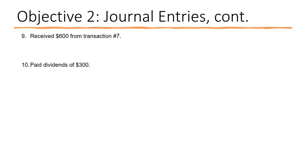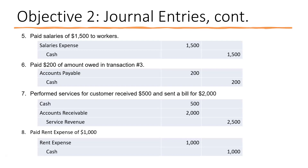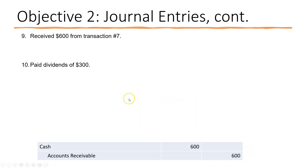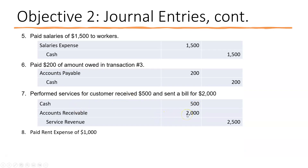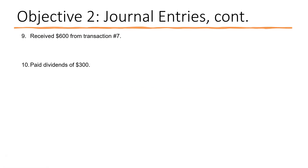Transaction nine: received $600 from transaction seven. Transaction seven was where we performed services, received $500 cash, and billed the customer $2,000. Transaction nine means we're receiving $600 of that amount owed. So we debit cash $600 because we received cash, and we credit accounts receivable $600 because the customer no longer owes us that amount — a decrease of an asset is done with a credit.